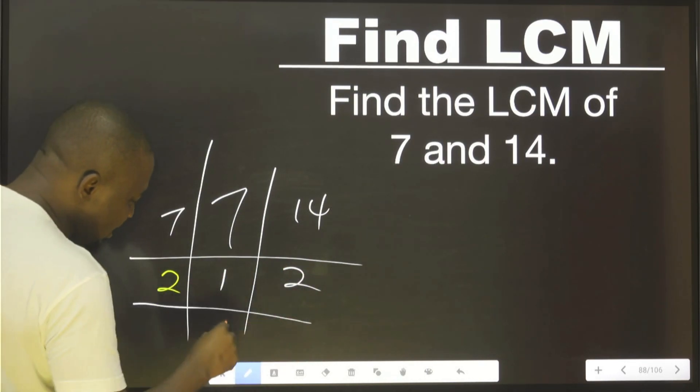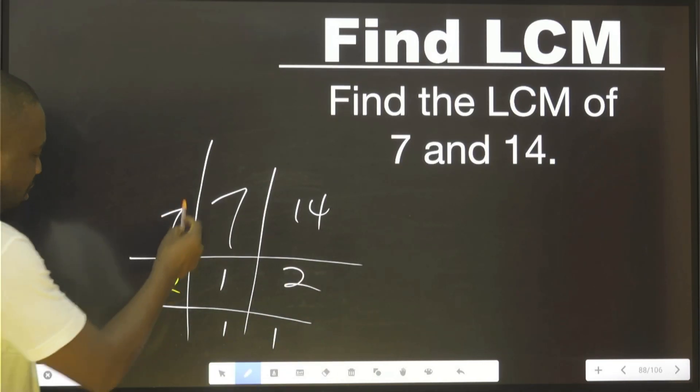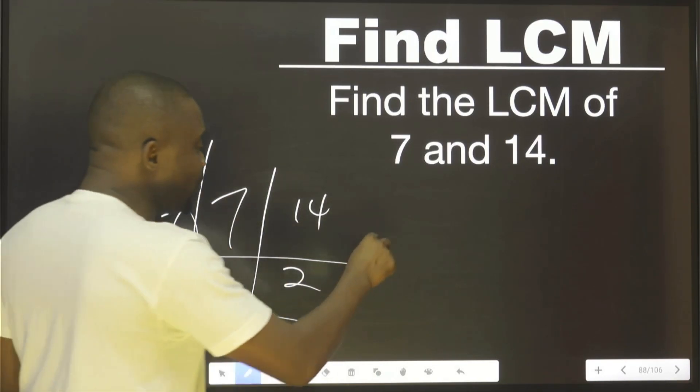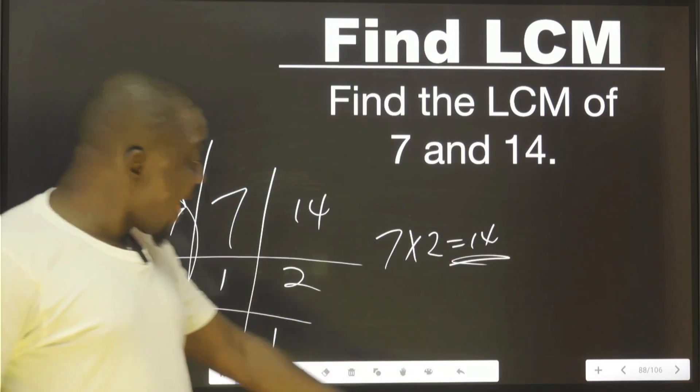Let me try two. Two into this. Cannot put the one. One. Now I have one, one. This is my LCM. Seven times two. Which is 14. Don't need to waste your time. Okay? Next.